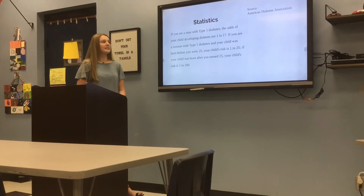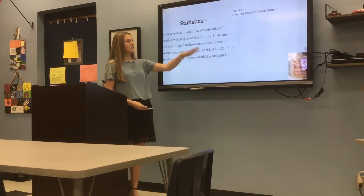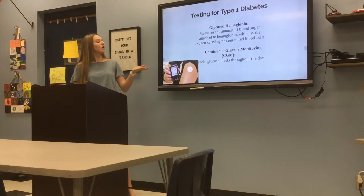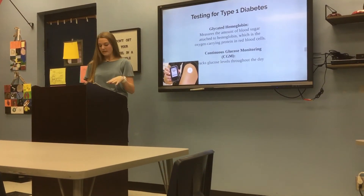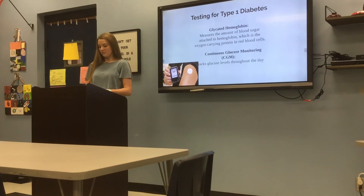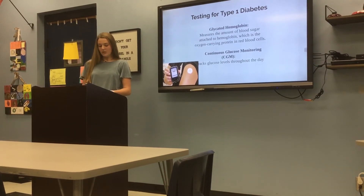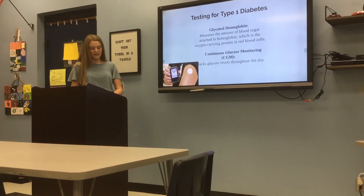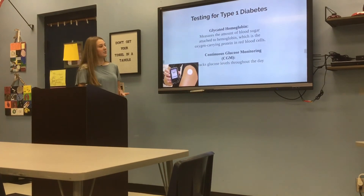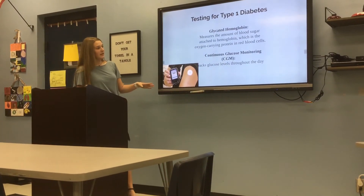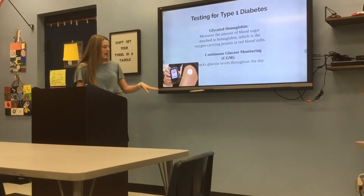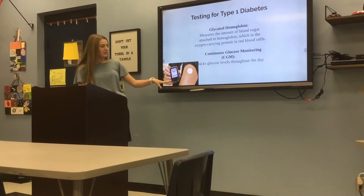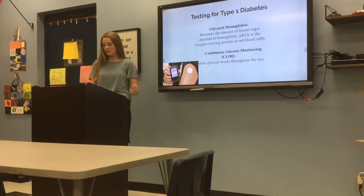There are different ways they test for diabetes. Looking at symptoms is common, but there are also specific tests. Glycated hemoglobin is a blood sample test where they measure the amount of sugar attached to hemoglobin — the oxygen-carrying protein in red blood cells. They also use continuous glucose monitoring, which you can do yourself, and it tracks glucose levels throughout the day.